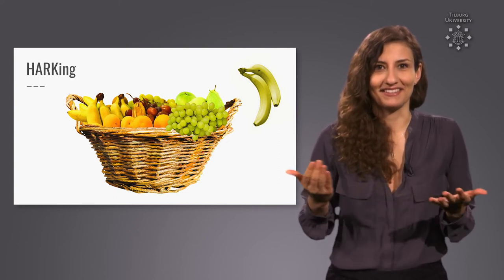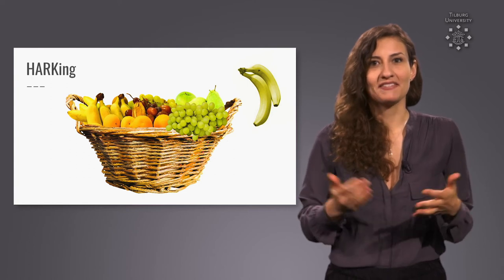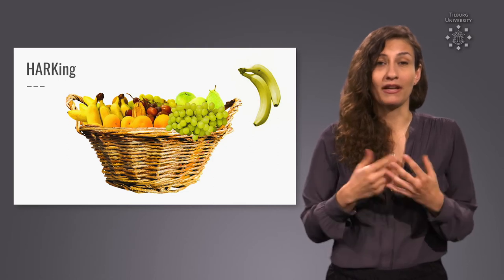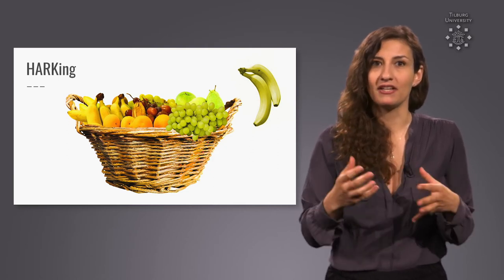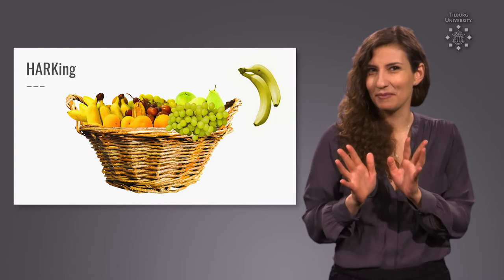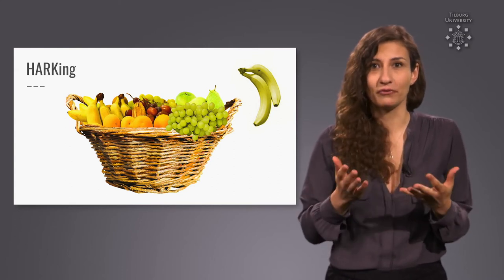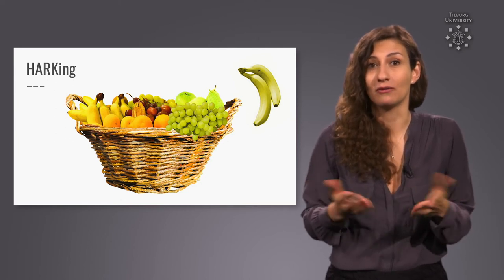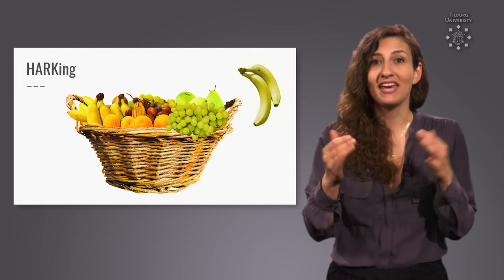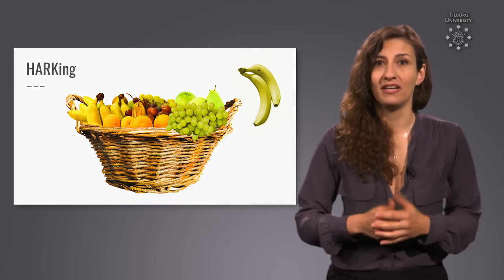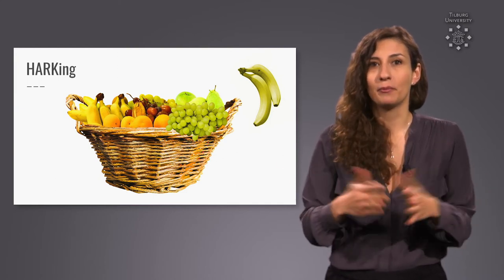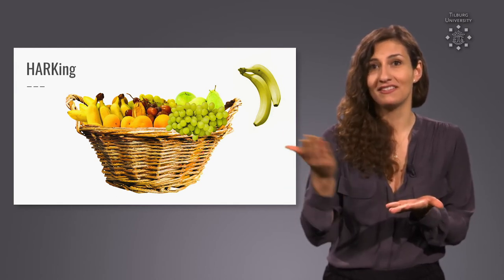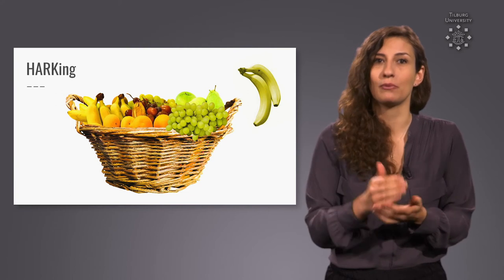It is obvious that this isn't right, isn't it? Harking means hypothesizing after the results are known. Sometimes, when we run an experiment and find a certain result that we have not actually anticipated, we may feel tempted to come up with an explanation for this result, and treat it as if we had expected this all along. Now, why is this a problem? We again distort the body of evidence available. Instead of admitting that we found evidence for something we didn't expect, we pretend like we had planned to test the theory that would lead to the effect we end up finding all along.